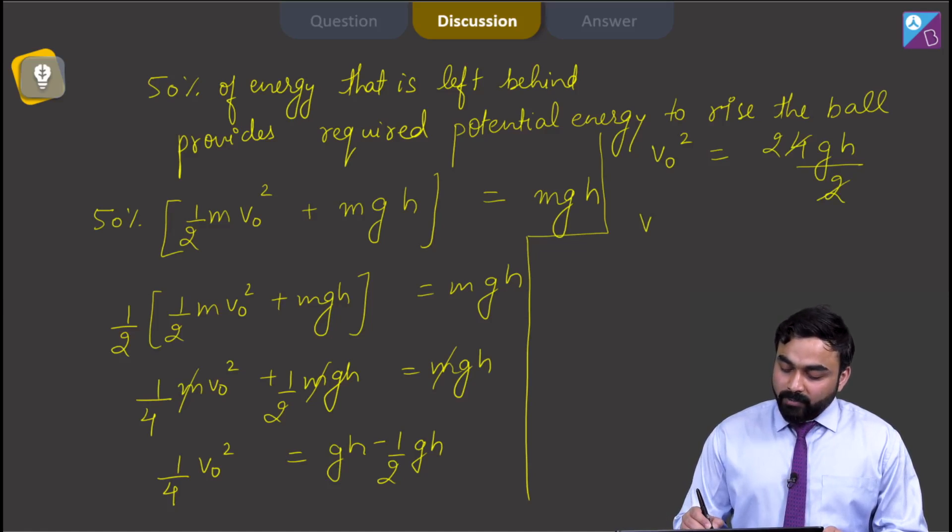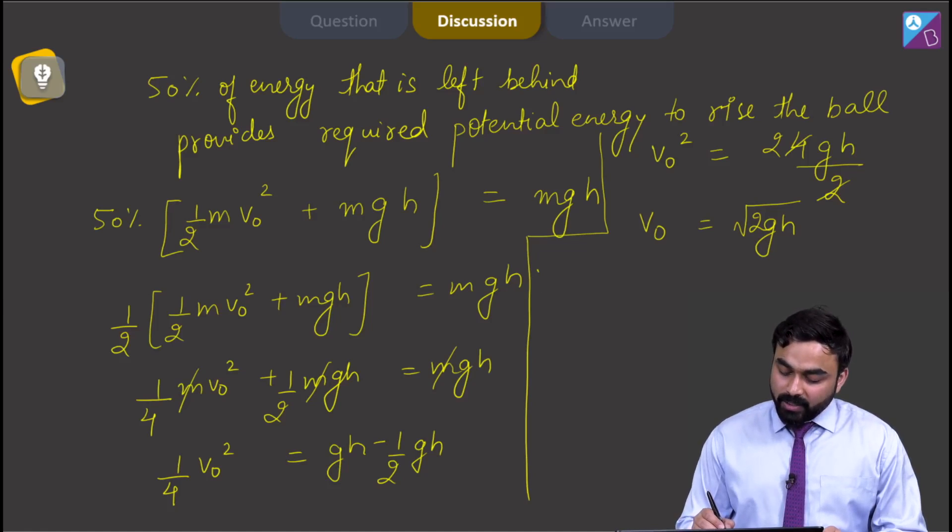Which will give me V0 equal to under root 2GH. And what is the value of H here? V0 will come out to be under root 2 into 10 into 20. So V0 will be 20 meter per second.